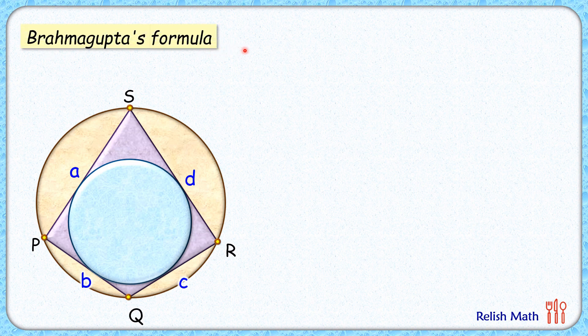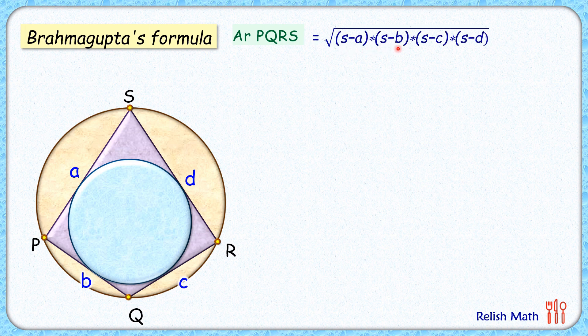Brahmagupta's formula says that the area of a cyclic quadrilateral is square root of (s-a)(s-b)(s-c)(s-d), where s is the semi-perimeter of the quadrilateral, that is, s = (a+b+c+d)/2.